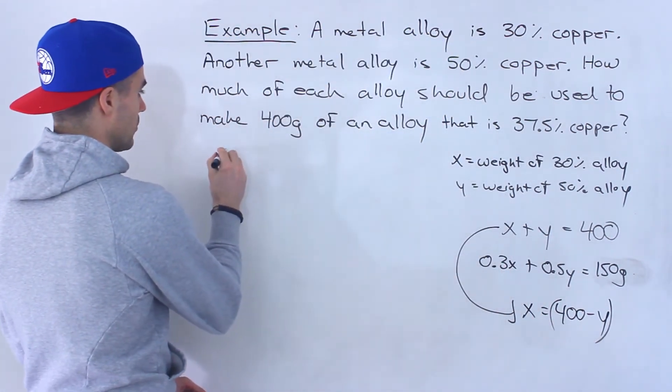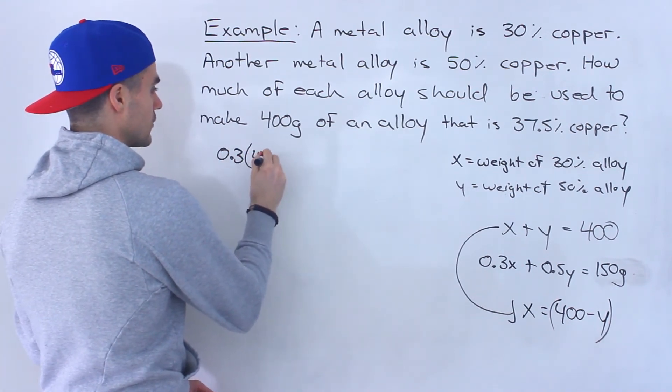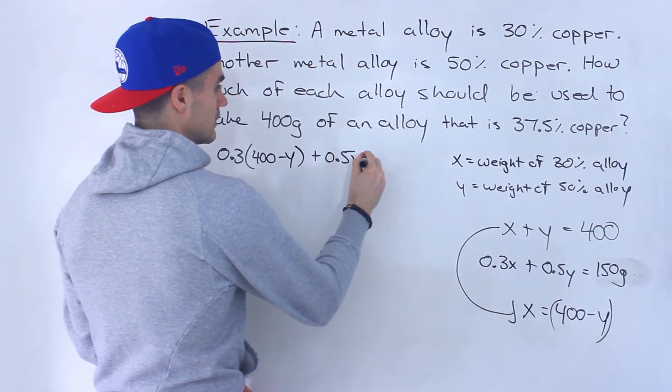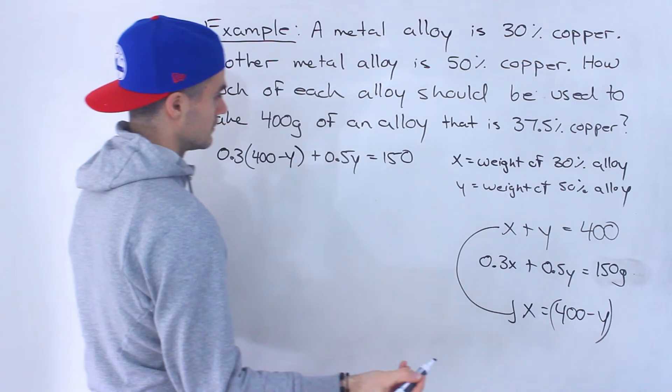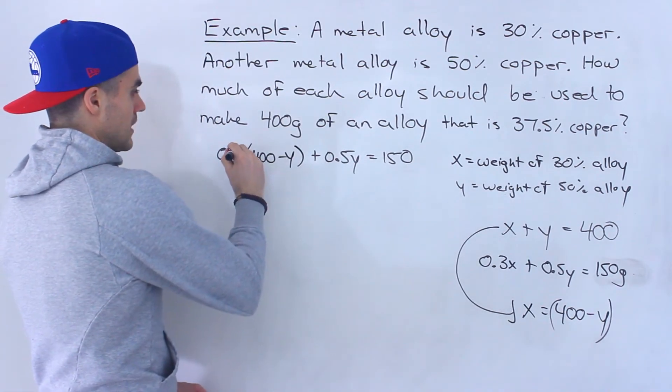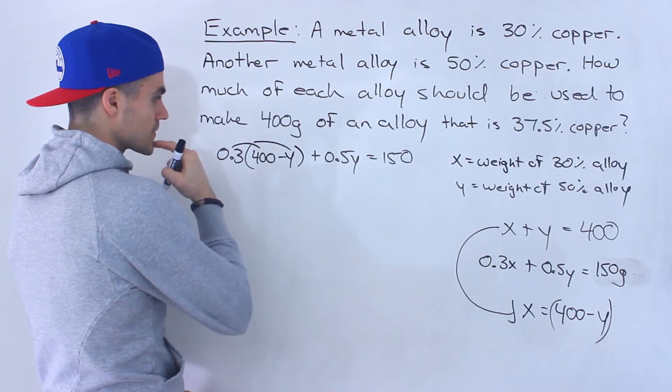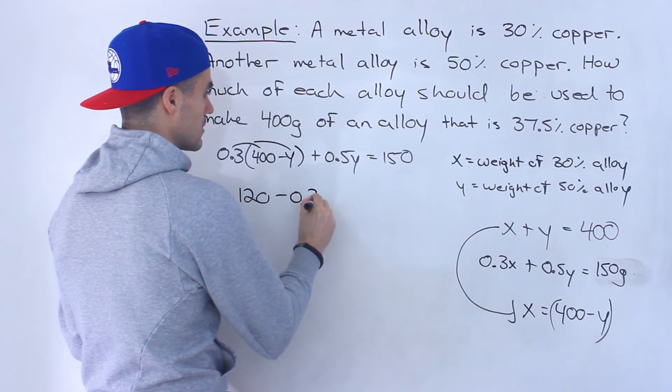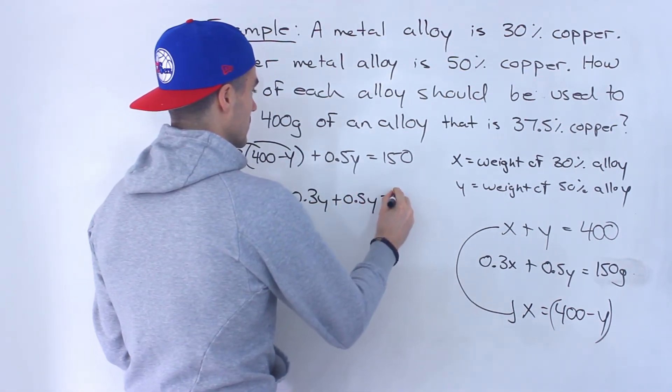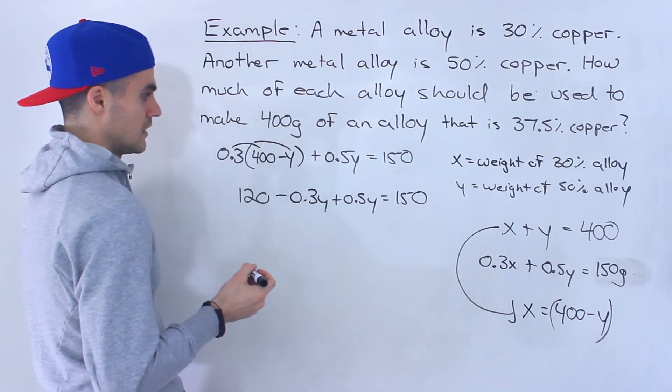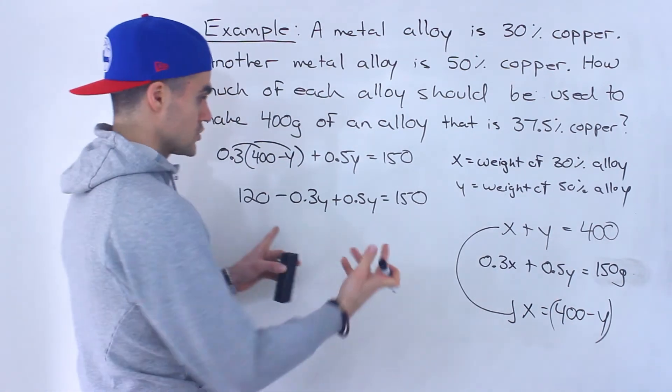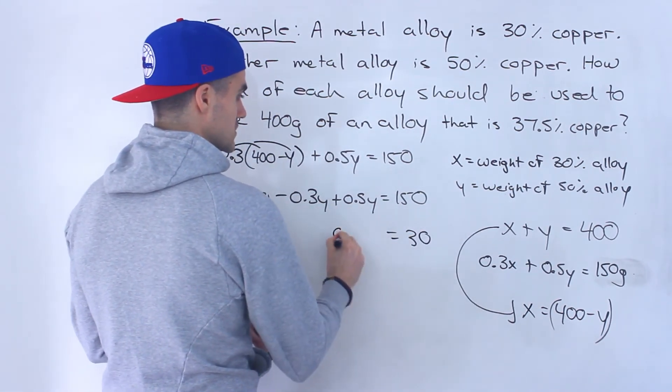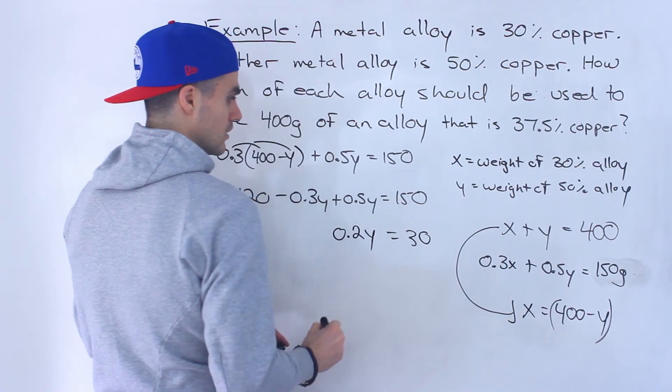So what we would end up with is 0.3 times 400 minus y plus 0.5y equals 150. And so now 0.3 times 400 that would give us 120. 0.3 times negative y is minus 0.3y plus 0.5y equals 150. And now we could solve for y. Bring the 120 over. 150 minus 120 gives us 30. Negative 0.3 plus 0.5 gives us 0.2y.